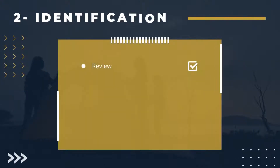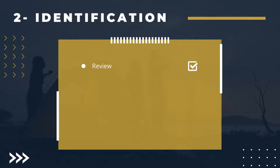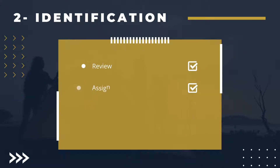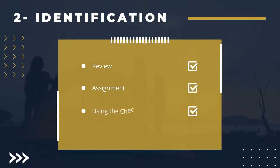2. Identification. Review: For a potential suspicious incident, preliminary information about the incident should be gathered. Then it must be decided whether the situation is a suspicious event or not. Assignment: The first person to examine the incident must be determined, and that person should take notes about the review. Using the checklist: There should be checklists for the analysis to be made in order to ensure consistent responses to incidents.